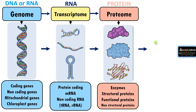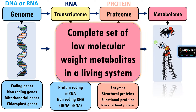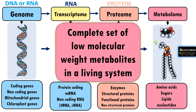A recent term is called metabolome. Metabolome is the complete set of low molecular weight metabolites in a living system. Metabolism means the chemical reactions happening inside the system, which includes anabolism and catabolism — synthetic reactions and degradation or breakdown reactions. All these chemical reactions produce different small molecules, and those molecules form the metabolome. It includes amino acids, sugars, lipids, nucleotides, etc.